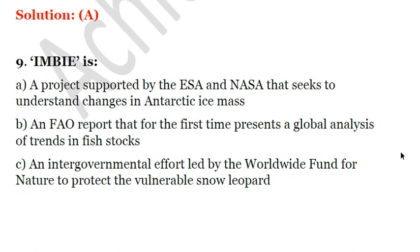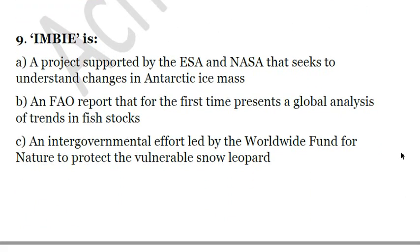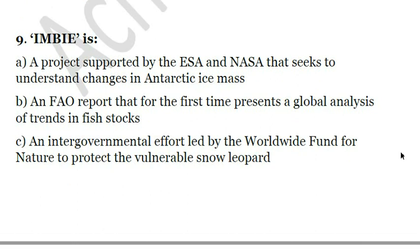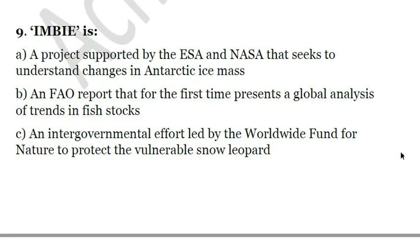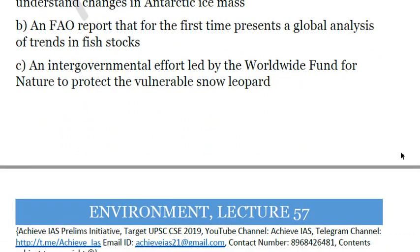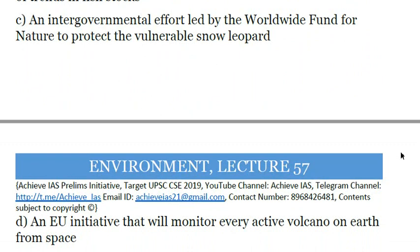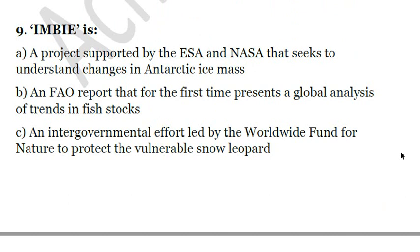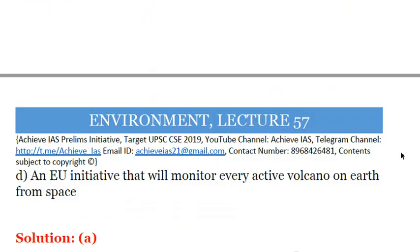The last question of today — we are covering nine questions today instead of the usual ten. The question asks what IMBIE is: A. A project supported by the European Space Agency and NASA that seeks to understand changes in Antarctic ice mass. B. An FAO report that for the first time presents a global analysis of trends in fish stocks. C. An intergovernmental effort by the WWF to protect the vulnerable snow leopard. D. A European Union initiative that will monitor every active volcano on Earth from space. The correct option is A — a project supported by ESA and NASA that seeks to understand changes in Antarctic ice mass.